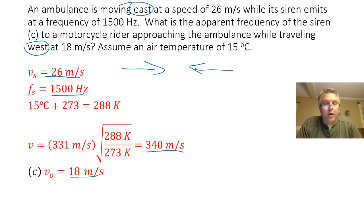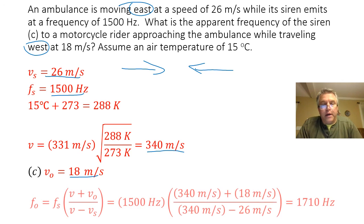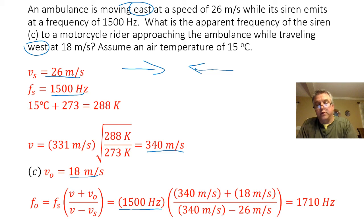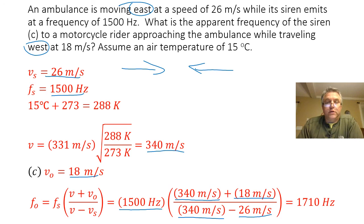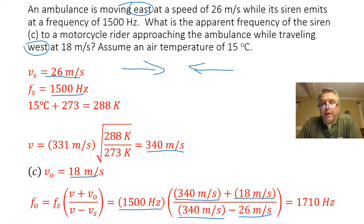When I plug all of those things into my Doppler equation — the frequency of the source at 1500 hertz, the velocity of the sound wave at 340 meters per second, the velocity of the observer at positive 18 meters per second, and the velocity of the source at positive 26 meters per second — I get an observed frequency by the motorcycle rider of 1710 hertz.